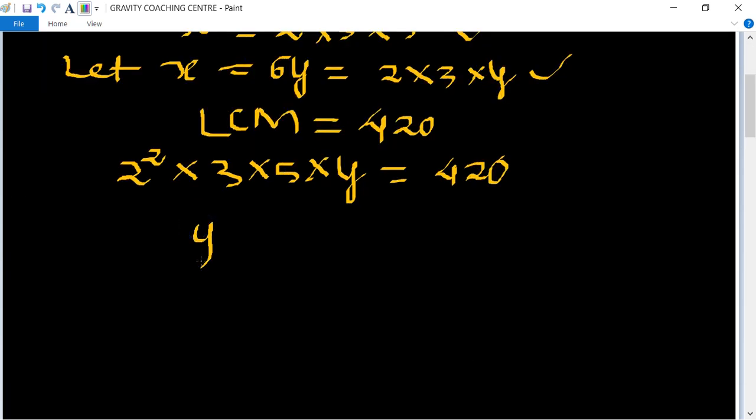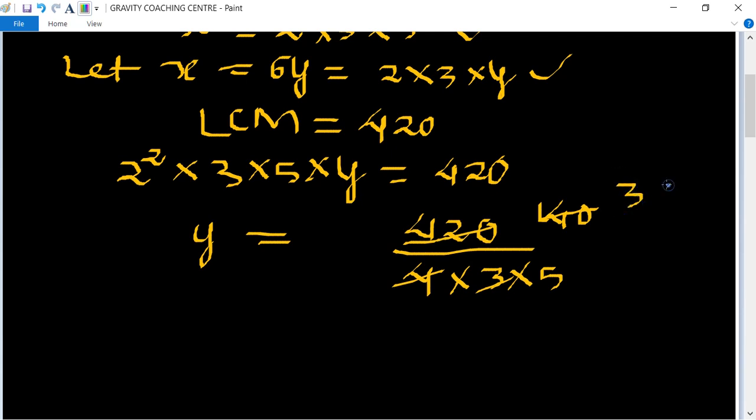So y = 420/(4 × 3 × 5). Simplifying: 420 divided by 4 is 105, divided by 3 is 35, and 35 divided by 5 gives 7. Therefore, y = 7.